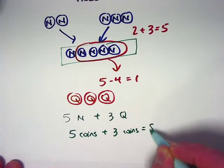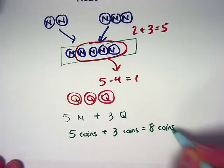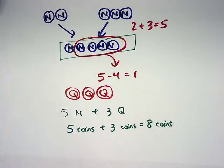Five coins plus three coins equals eight coins altogether. So that's a basic idea with applying addition and subtraction.